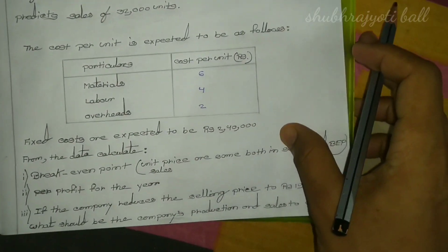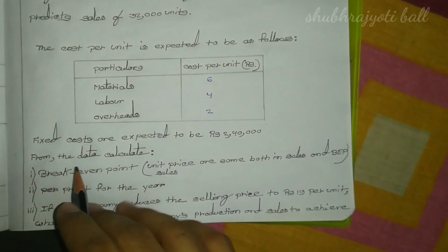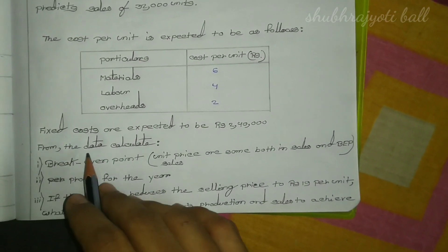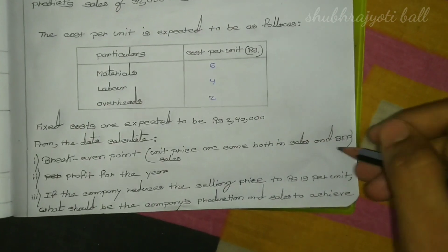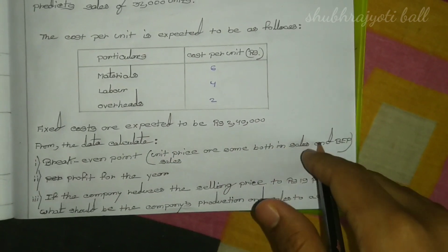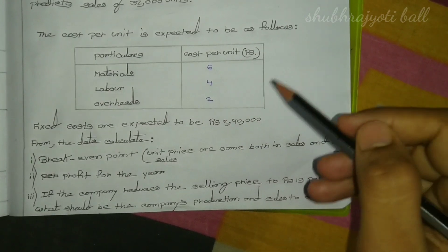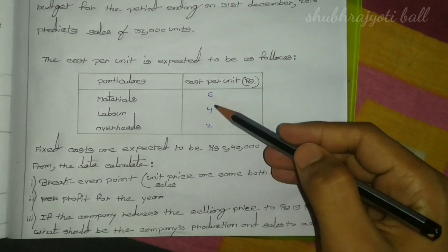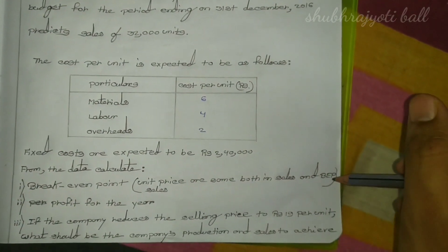From this data, calculate the break-even point. At BEP, selling price and cost are the same — both in sales and BEP sales. So in BEP sales, the figures per unit will be: ₹6 (material), ₹4 (labor), ₹2 (overhead), and ₹20 selling price — same in BEP sales.